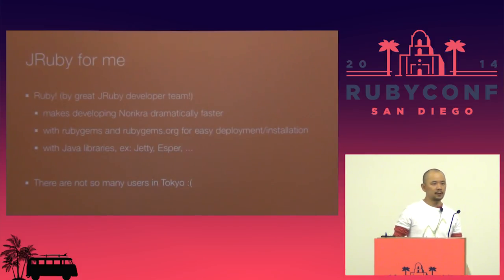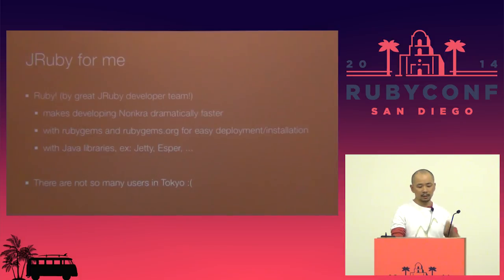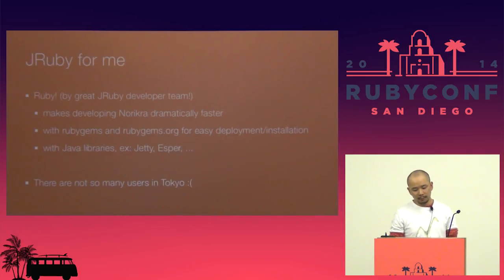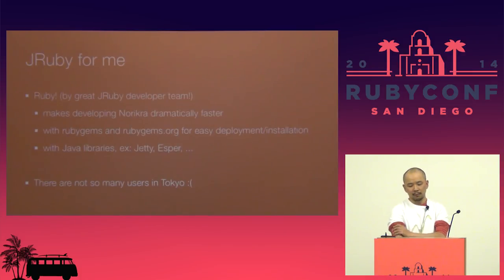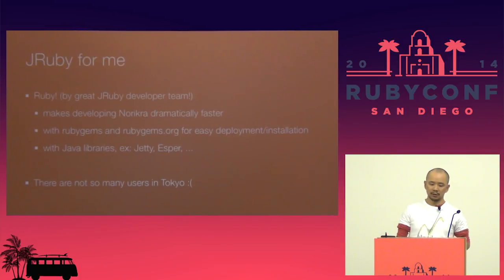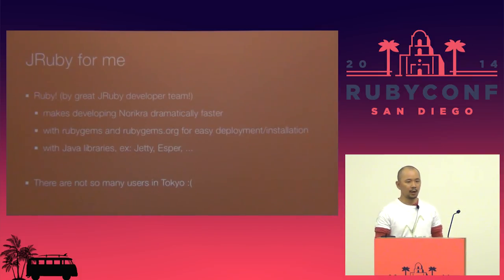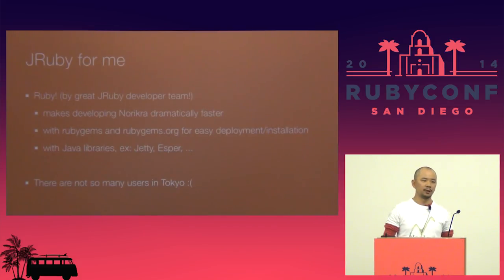Before Norikra, I did not use JRuby, but these two factors made me use JRuby. JRuby for me is just Ruby, and this is brought by a great JRuby developer team. JRuby makes developing Norikra dramatically faster with Esper and Ruby's well-known positive points. JRuby with RubyGems and RubyGems.org enables easy deployment and installation. With JRuby, we can use Java libraries like Jetty or Esper or many others — I'm using many other Java libraries in Norikra. That is a very good point for building data processing middleware.